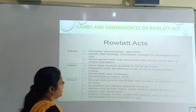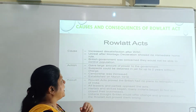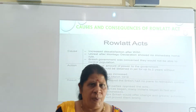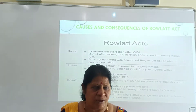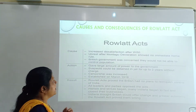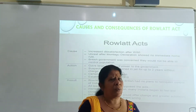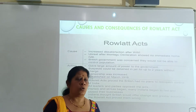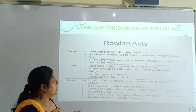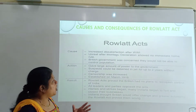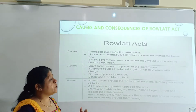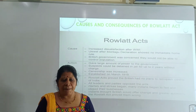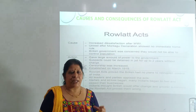After that, the Montagu Declaration — Montagu came forward with reforms. If you remember, we did it in Class 8 also. That showed no immediate steps to be taken by the government to provide home rule. The British government was concerned they would not be able to control the population. Hence, they passed this act called the Rowlatt Act of 1919.